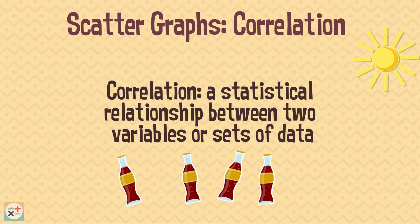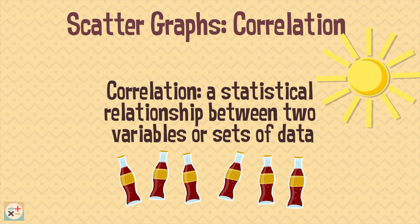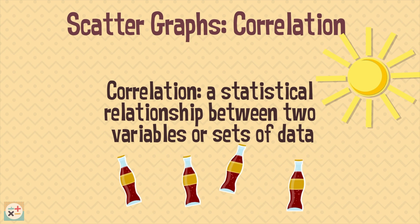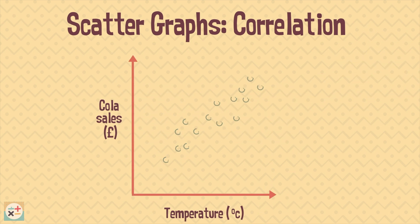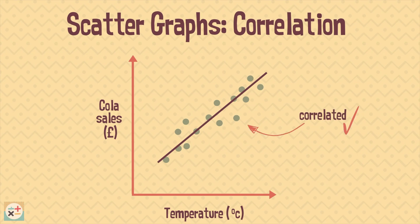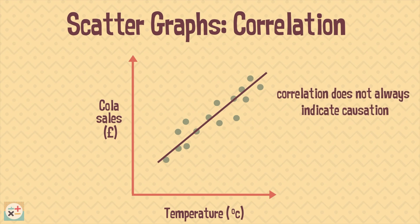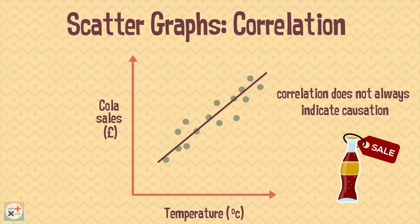For example, cola sales increase as the temperature increases. This information can be visually represented on a scatter graph. If we can draw a line of best fit, then we can say that cola sales and temperature are correlated. However, it's important to remember that just because two things are correlated doesn't always mean that an increase or decrease in one thing has caused the increase or decrease in the other. In this example, we can't be certain that the increase in temperature has caused the increase in cola sales, even though it may seem likely. There could have been a discount or offer on the price of the cola on the day the data was collected, which could have been the cause for the increase in sales. Therefore, correlation does not always indicate causation, so it's important to consider other factors.